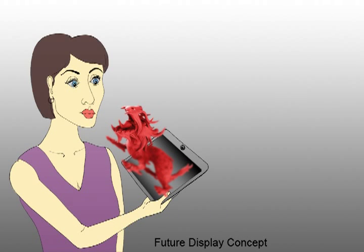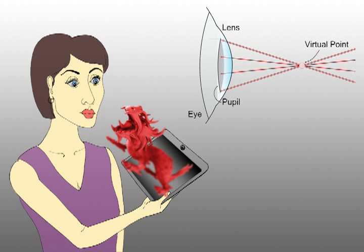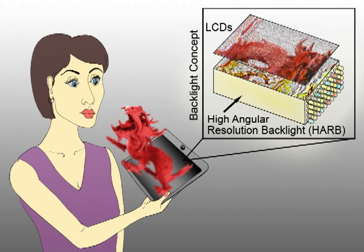A future concept is shown here. The challenge to build such a display is the synthesis of light fields that have sufficient angular resolution to steer multiple different light rays into the pupils of a human observer. To achieve this, we use a High Angular Resolution, or HAR, backlight combined with stacked layers of LCD panels.